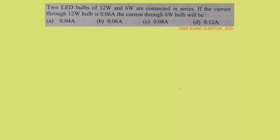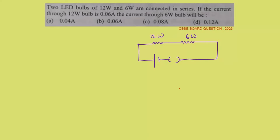We have a series connection with two LED bulbs — one bulb is 12 watt and the other is 6 watt, as shown in the diagram. In this circuit, the current through the 12 watt bulb is 0.06 ampere, so I = 0.06 A.